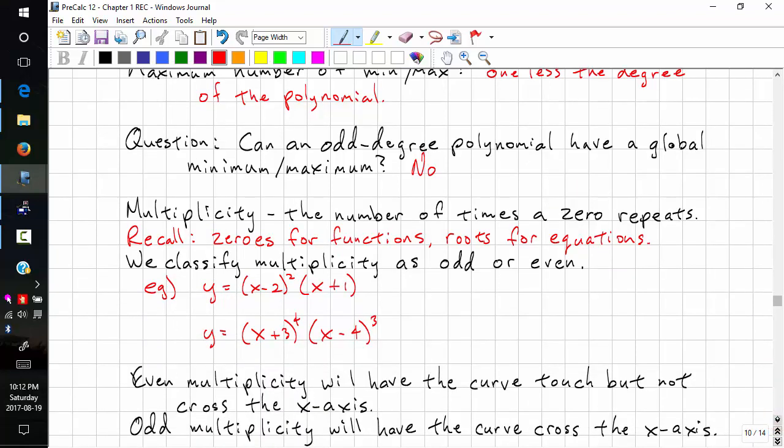We talked about repeated roots briefly last time. This is called multiplicity. So it's the number of times the zero repeats. And you should know that we say we're looking for zeros for functions and roots for equations. And a lot of people interchange this. Try to be as correct as possible, and you'll learn it faster.